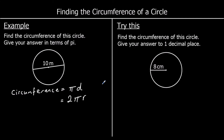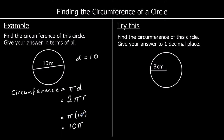So this first question says find the circumference of the circle. It's got a diameter of 10 meters. The diameter is from one side of the circle to the other, from one part of the circumference to the other side, going through the center. If we use pi times d, it's going to be pi times 10. Leaving our answer in terms of pi, we just write that as 10 pi. The circumference is the perimeter of a circle, so it's in meters.